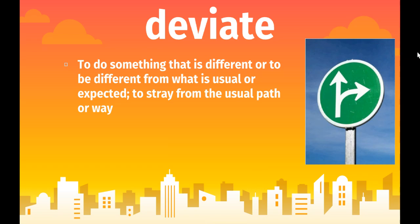Your next word is deviate. This means to do something that is different, or to be different from what is usual or expected — to stray from the usual path or way. So if you go off your normal path, the normal way, the normal thing you would do, that means to deviate. On your homework, give me a situation where you might have to deviate from your usual path or plan.